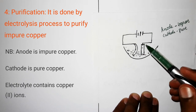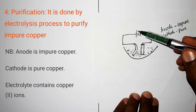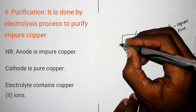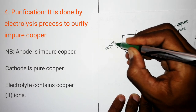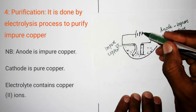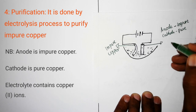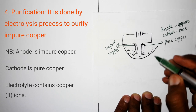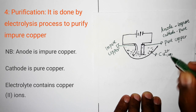In the electrolysis setup, the anode is represented as long and thin — that is the impure copper. The cathode is short and thick — that is the pure copper. The electrolyte should contain copper two ions; it can be copper sulfate or copper nitrate. At the anode, oxidation occurs: copper atoms lose electrons to form copper two ions (Cu → Cu²⁺ + 2e⁻). At the cathode, copper two ions gain the two electrons lost at the anode and deposit as copper solid (Cu²⁺ + 2e⁻ → Cu).